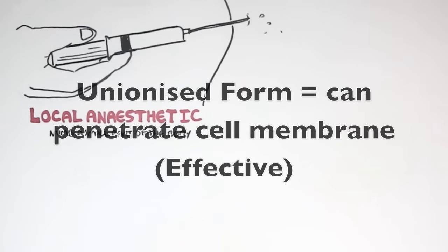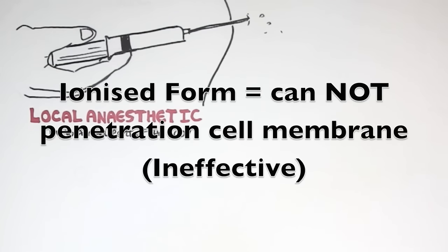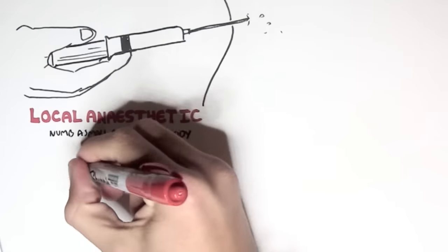If a drug is in an unionized form, it can penetrate the cell membrane. It is effective. For example, it can be absorbed by the body. However, if a drug is in an ionized form, if it's polar, it cannot penetrate the cell membrane. It's not very effective. And for example, it cannot be absorbed by the body.